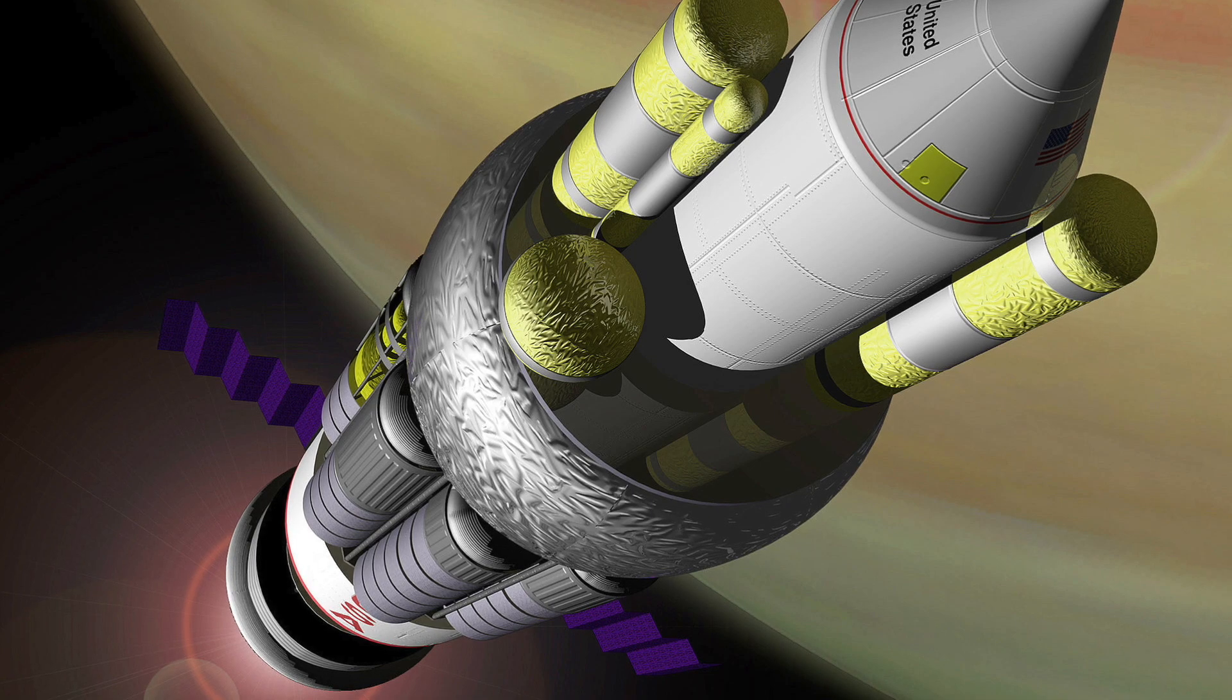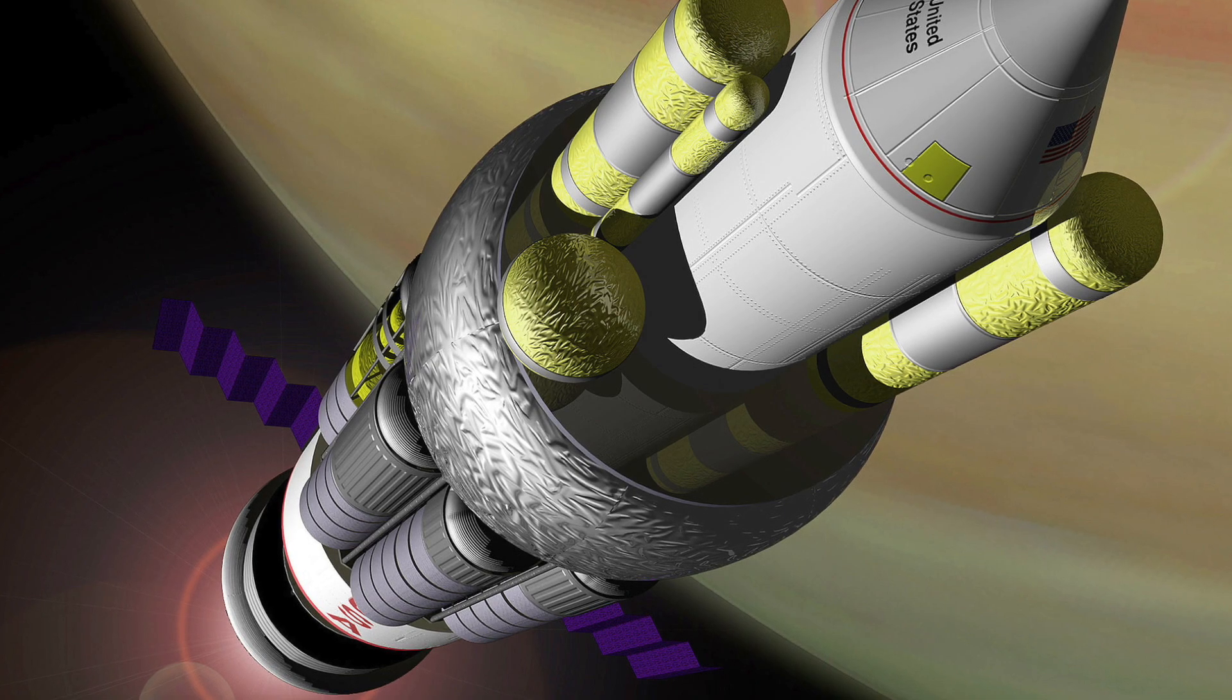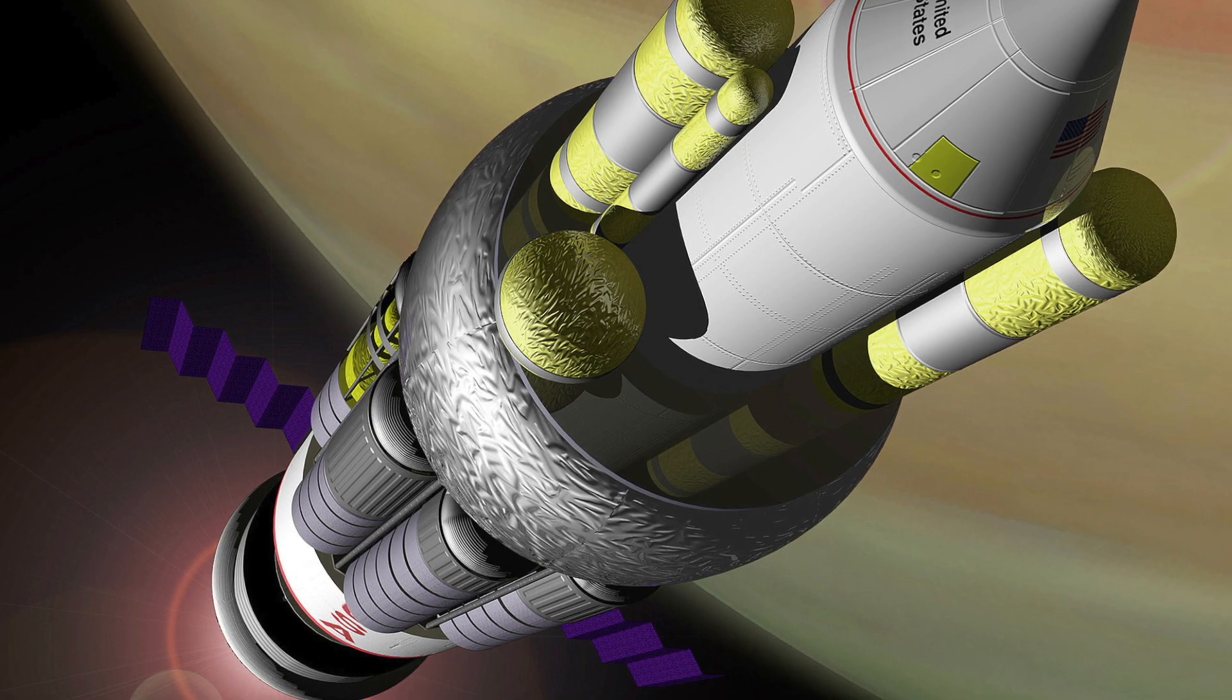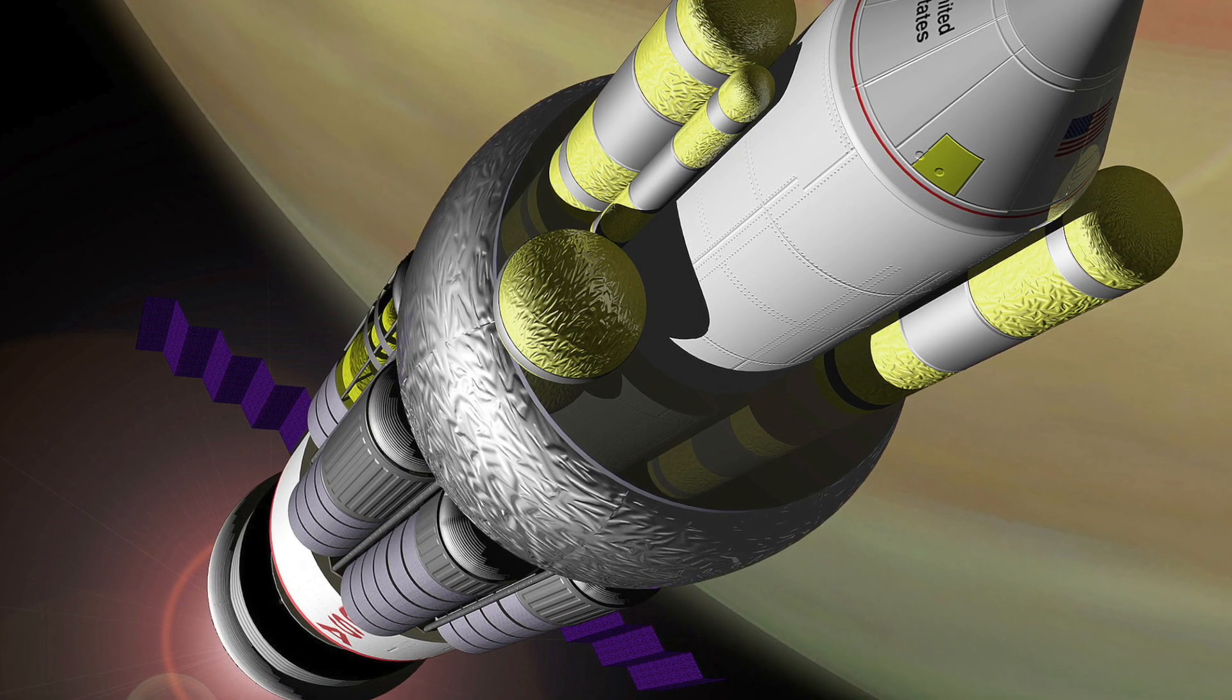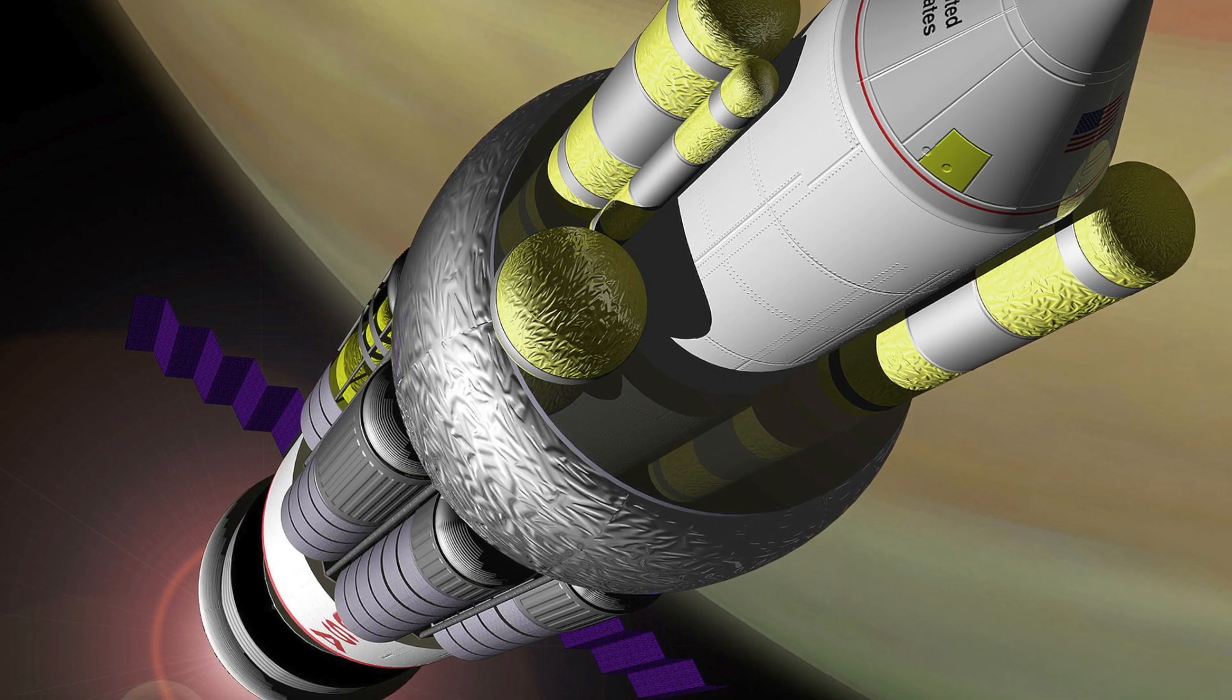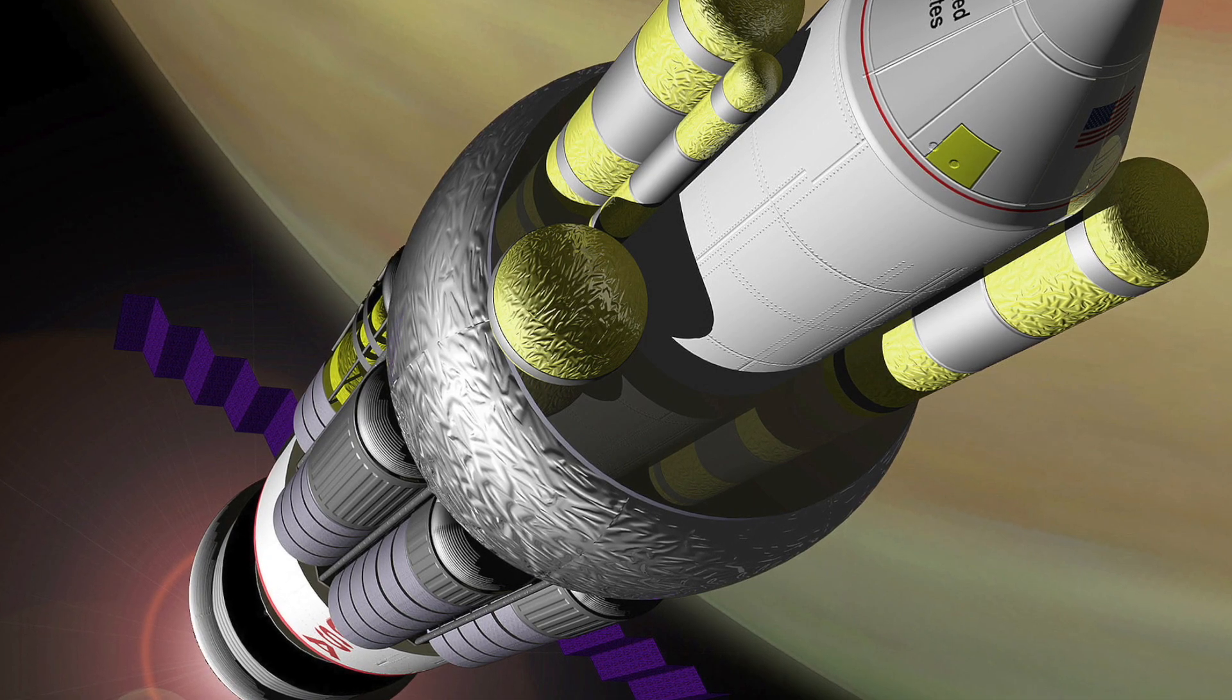For optimal performance, the Orion drive used smaller bomb yields, typically around 0.15 kilotons, with approximately 800 bombs required to reach orbit and a pulse rate of roughly one per second. This configuration allowed for efficient propulsion with lower g-forces on the pusher plate and reduced the need for damping to smoothen acceleration.